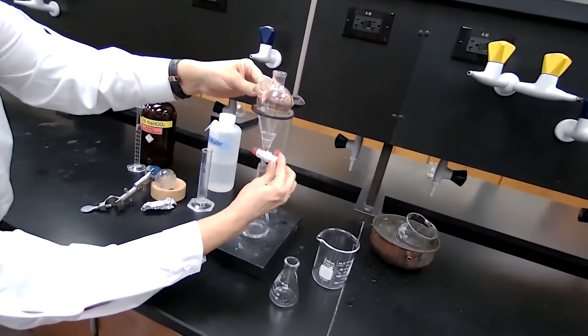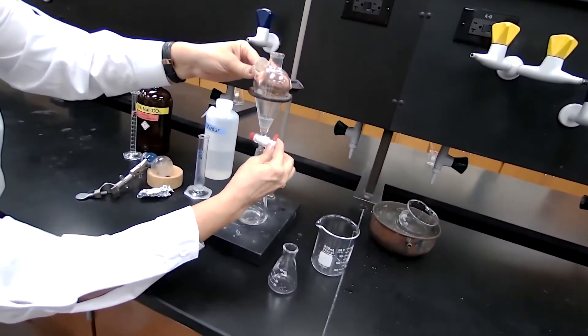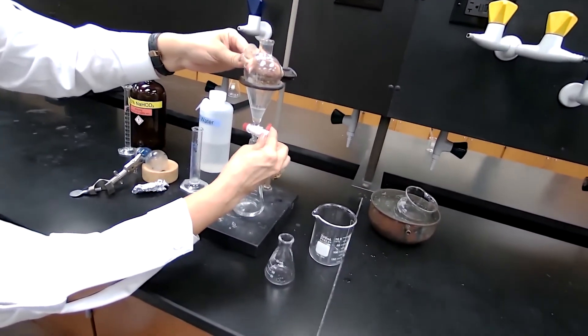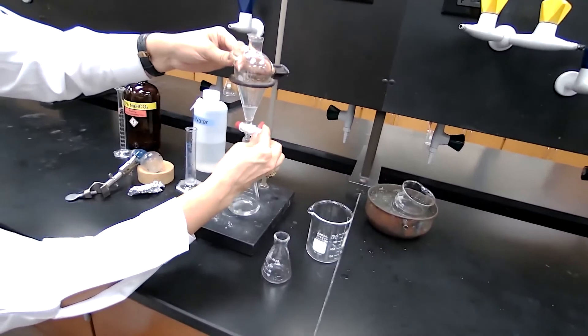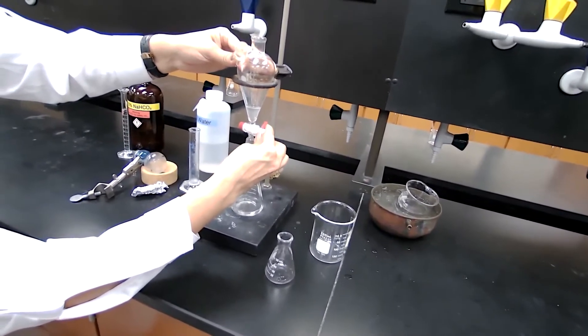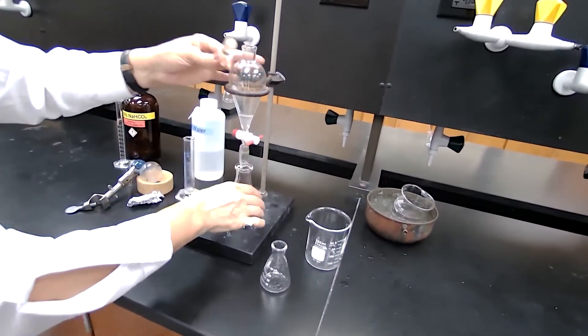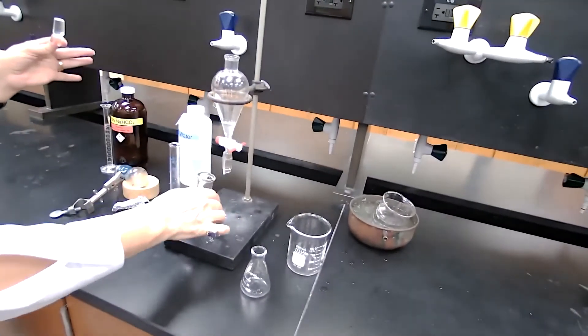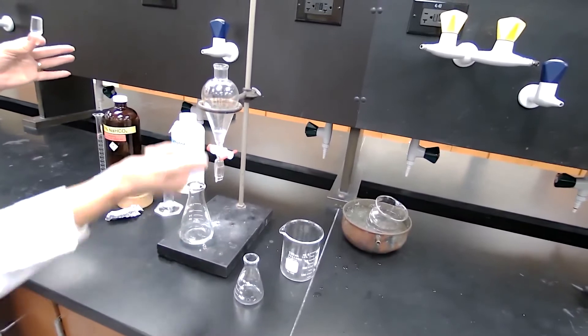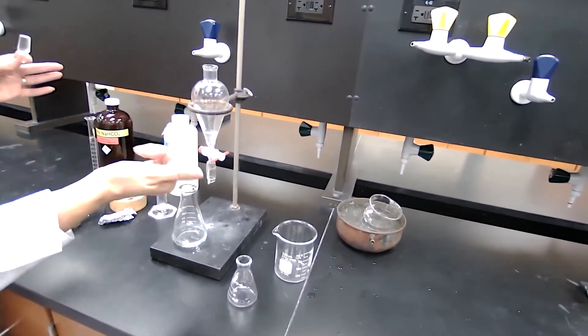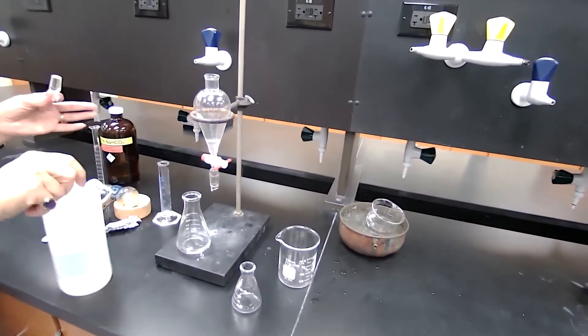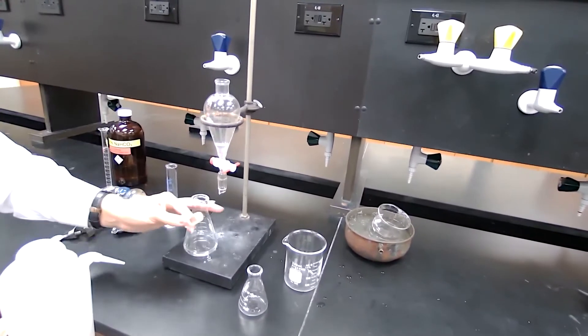So I'm going to make sure that no organic layer goes into the Erlenmeyer flask. I will stop right there. Sometimes you're not sure if this is the aqueous layer or the top one is the aqueous layer, because organic compounds could have high density as well.